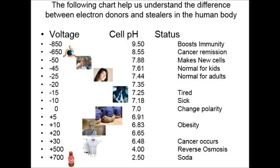You'll also see reverse osmosis on the chart. People think having a reverse osmosis filter system on their water is a good thing. But the pH balance of reverse osmosis water is 4.0 — it's highly acidic, and its voltage is at positive 500. So it is dead water. Soda is highly, highly acidic. It would take you days and days to get your body back to proper pH after just drinking one soda. It takes about 36 glasses of water to combat one glass of soda — more than anyone can drink. The voltage on a soda is positive 700, and its acidic pH balance is 2.5.